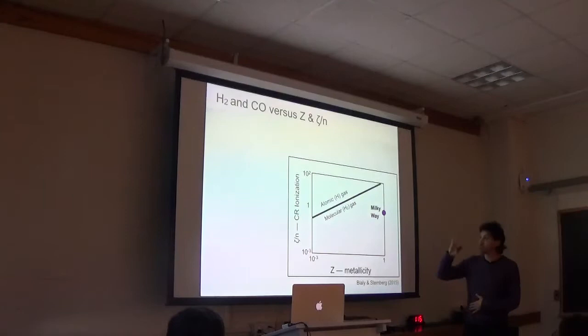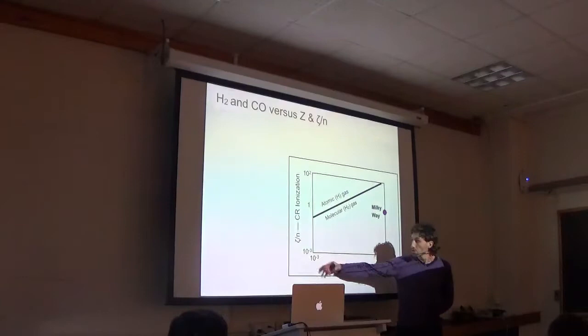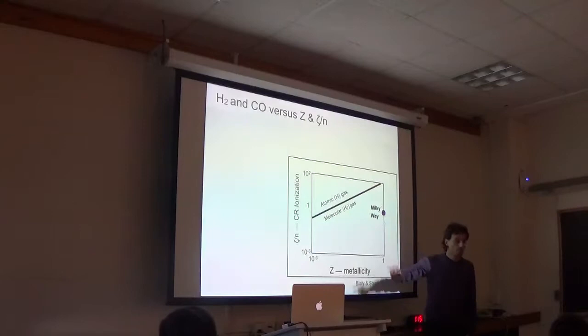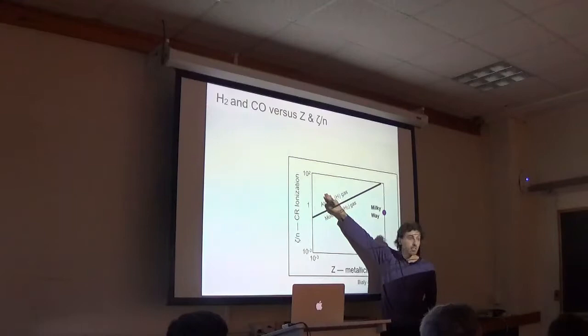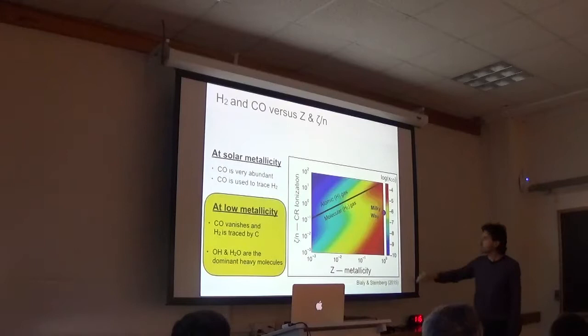However, you can still absorb part of the UV by H2 self-shielding even if the metallicity is zero. This is important because this allows you to form a molecular core even at very low metallicity or zero metallicity gas. So the cosmic rays and X-rays are important because they can penetrate inside and they actually drive the chemistry, because when the temperature is low you need something else to drive the chemistry and this is what the cosmic ray and X-ray do.